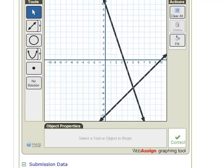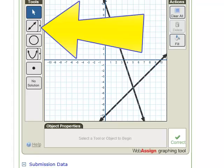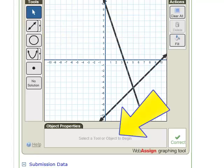So once again, to graph a line, you grab the line, then you can type in two points down here, or just find the point, click, find the second point, click, you have your line.